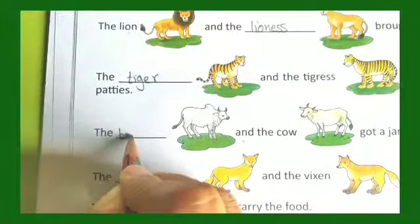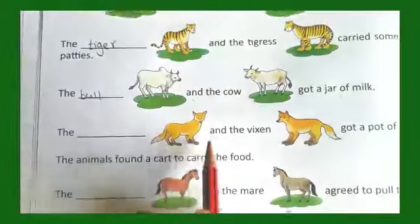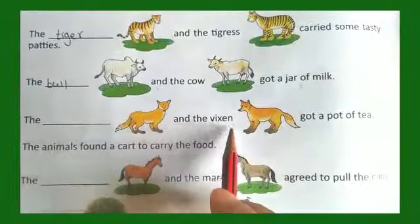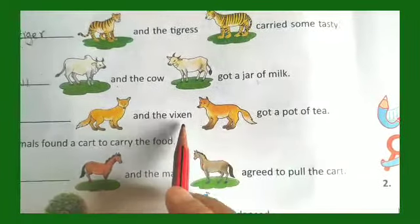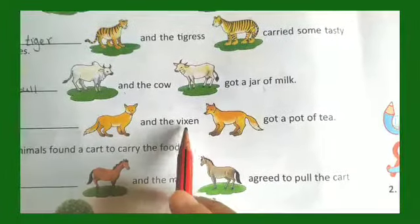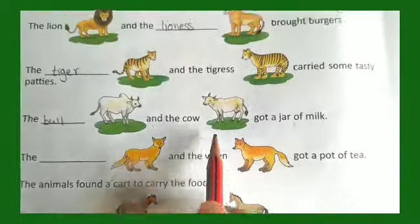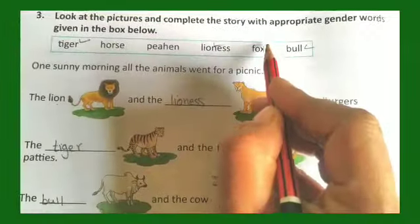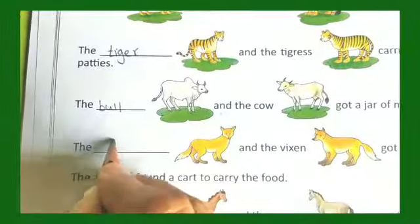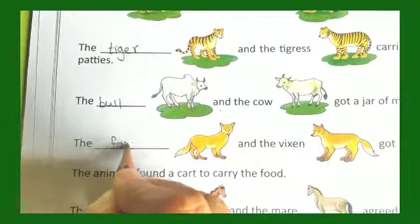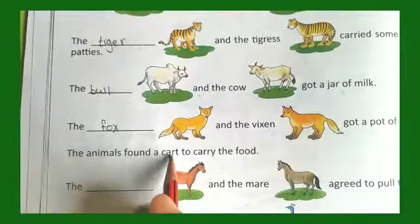The dash and the vixen got a pot of tea. We know the word vixen, so the opposite gender of vixen is fox. We write down the word fox.